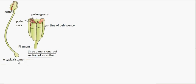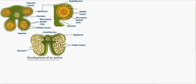Here is the structure of the male reproductive part — a typical stamen. It has got an anther and a long stalk known as the filament. In the three-dimensional cut section of an anther, you can see the four lobes. These regions are the lines of dehiscence, and these structures are the pollen sacs where you can see the pollen grains. Here is the development of the anther — this is the first, second, third and fourth microsporangium. Each microsporangium has an outer layer known as the epidermis, inner to which lies the endothecium, then the middle layers, and in the innermost layer you can see the tapetum which gives nourishment. And these are the microspore mother cells which give rise to the pollen grains.